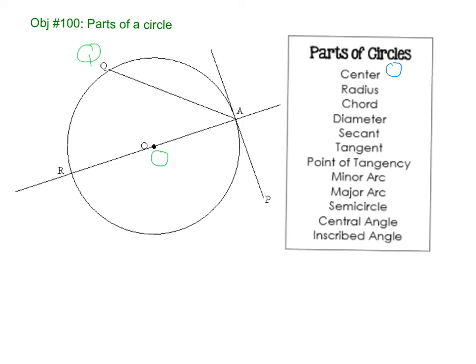There's a couple different radii that you can use. You can say OR is a radius. You could also say OA is a radius. Alright, because it's from the center out to the radius. A chord. A chord connects two points on the circle, so that's QA. The diameter goes through the center, so that's RA. A secant goes through two points, so that's RA again, but it's a line. RA, but a line. So make sure you put the arrows on it.